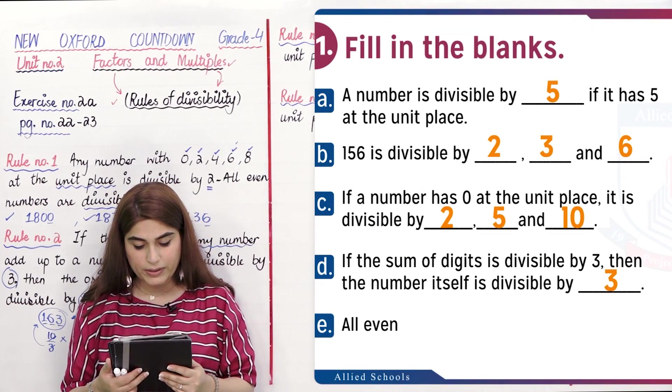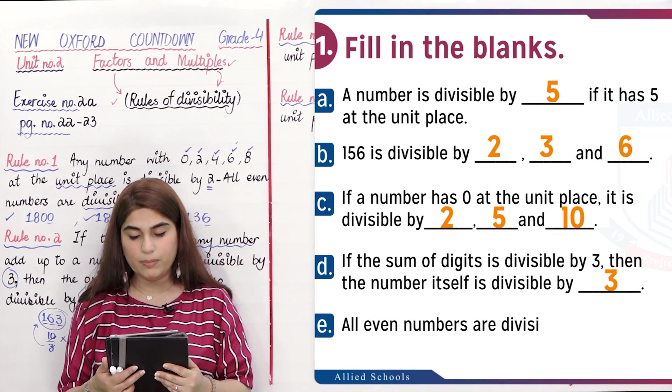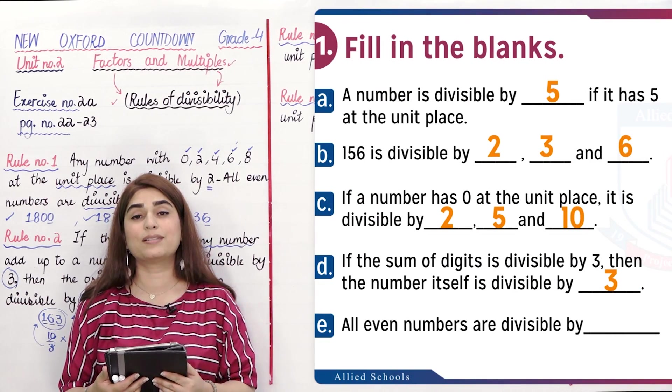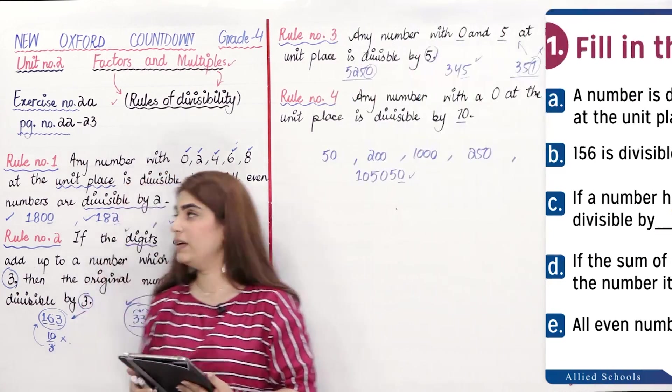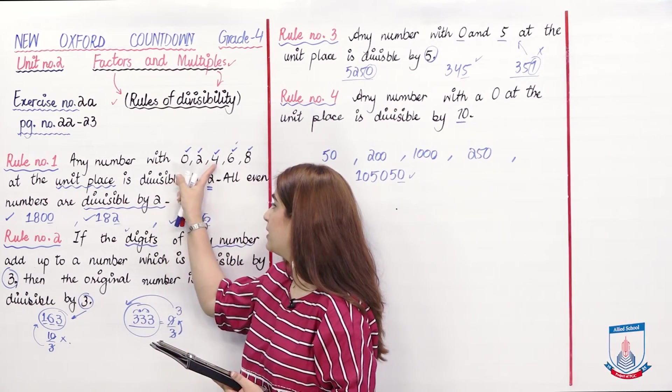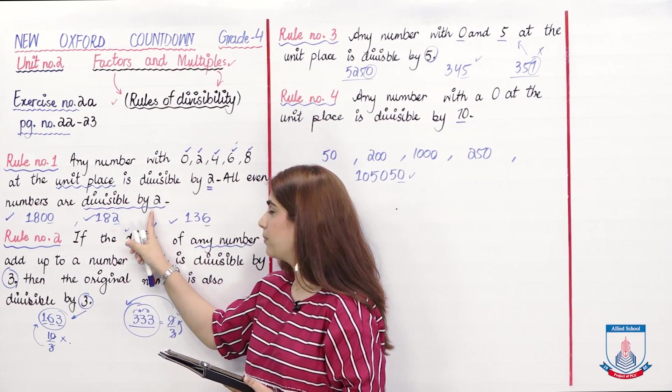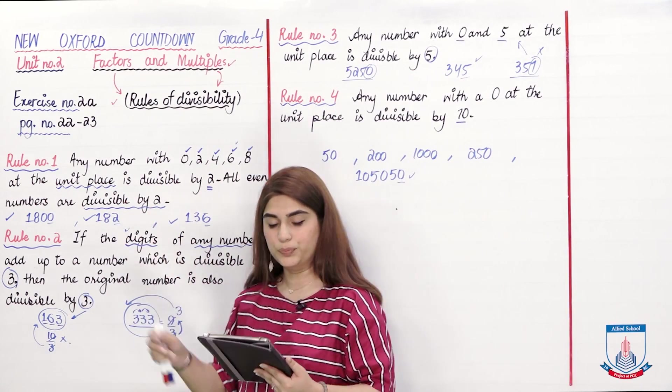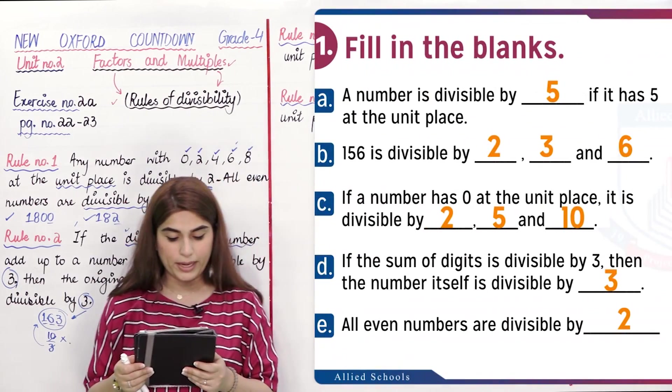Question (e): All even numbers are divisible by dash. Are all even numbers divisible by 2? Yes — the answer is 2.